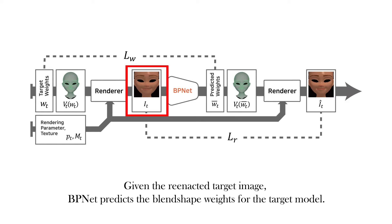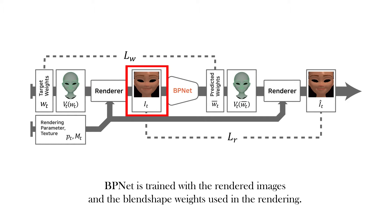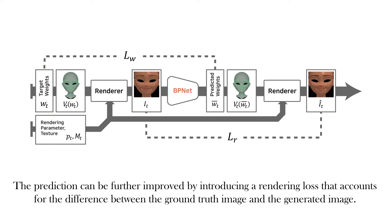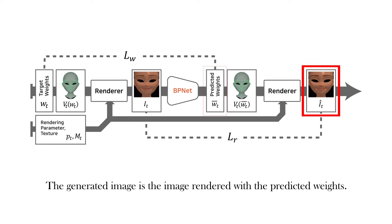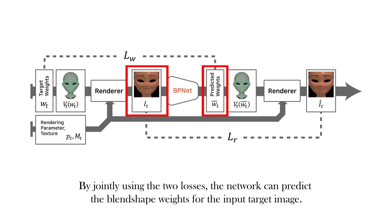Given the reenacted target image, the BPNet predicts the blend shape weights for the target model. The BPNet is trained with the rendered images and the blend shape weights used in the rendering. The network is updated using a loss that compares the ground truth weights with the predicted weights. The prediction can be further improved by introducing a rendering loss that accounts for the difference between the ground truth image and the generated image — the image rendered with the predicted weights. By jointly using the two losses, the network can predict the blend shape weights for the input target image.